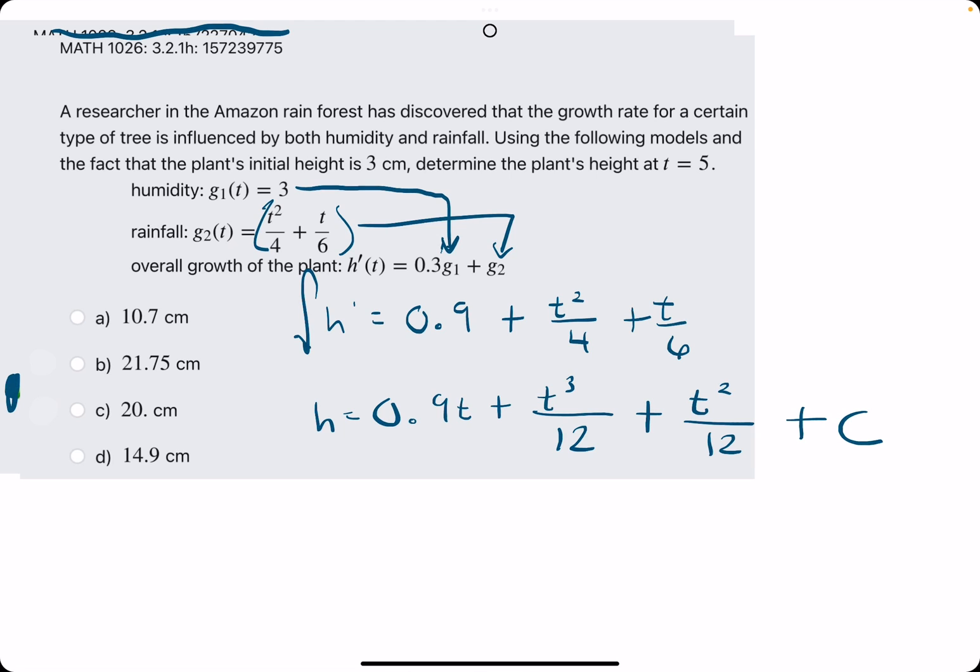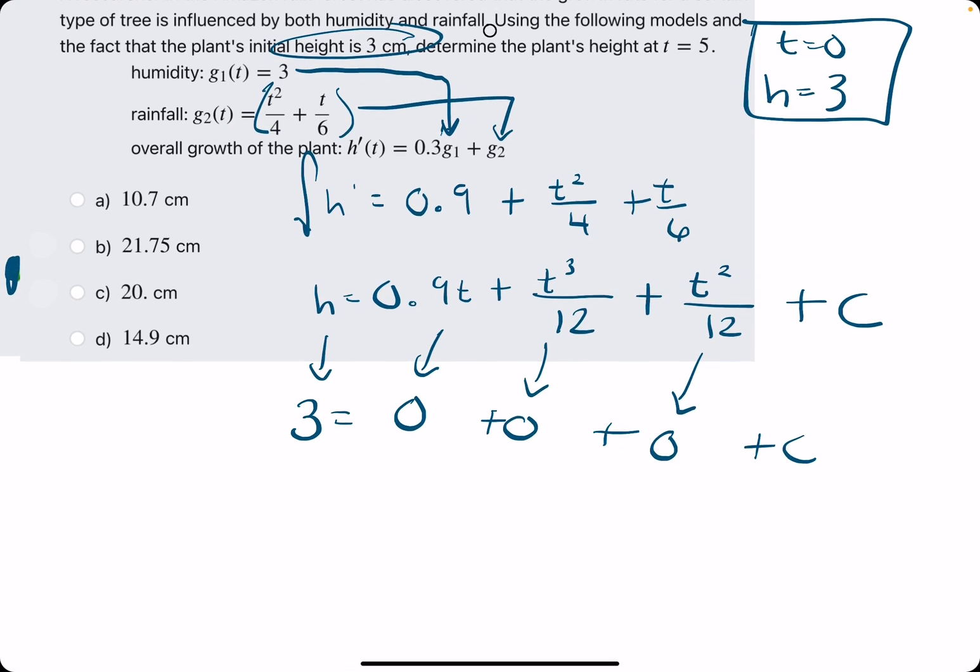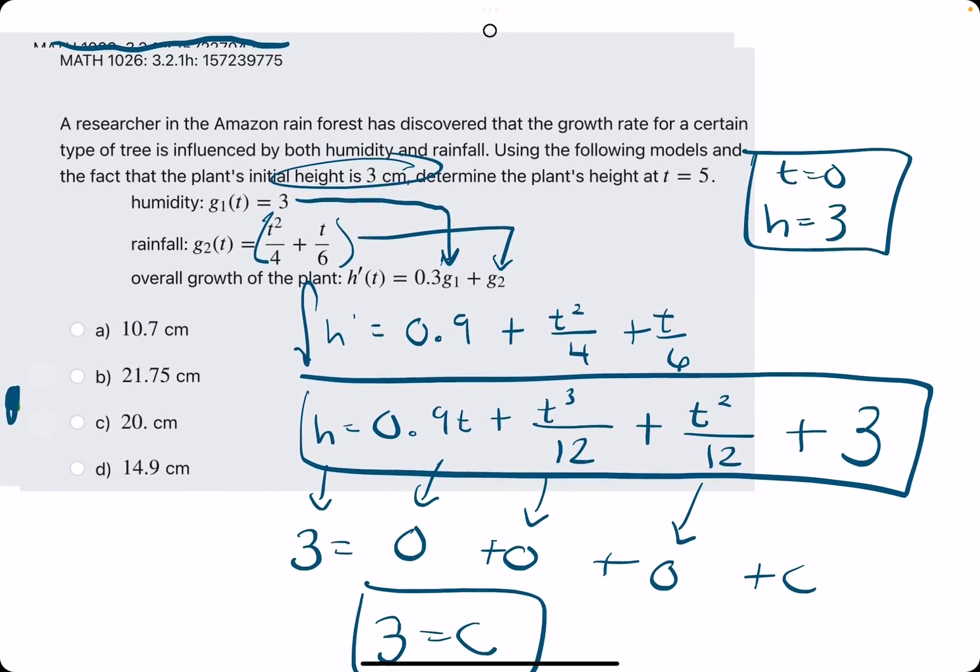Now we solve for C using the initial height, the initial condition of 3 centimeters, which means when t equals 0, h is 3. So we plug in 3 for h and 0 for t. This goes to 0, this goes to 0, and this goes to 0. Then we have plus C, so all we find is that 3 equals C. Plug in 3 for C, we have our complete height equation.